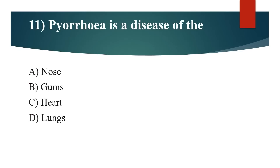11th question: Pyorrhea is a disease of the? Option A: Nose. Option B: Gums. Option C: Heart. Option D: Lungs. Answer is Option B: Gums.